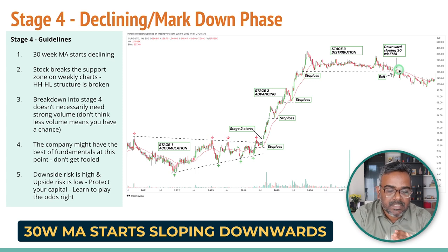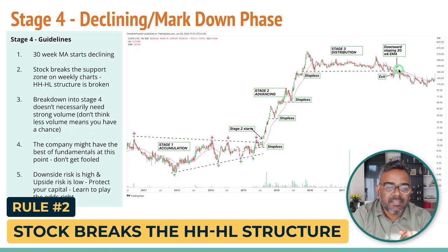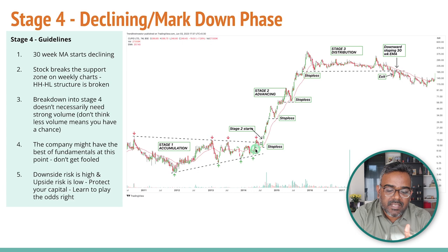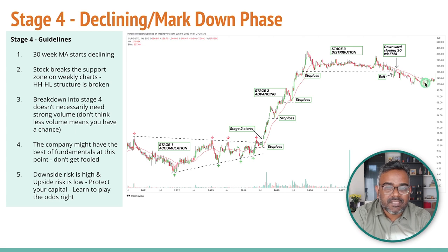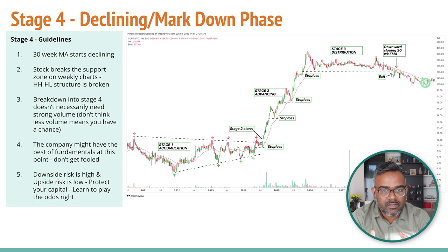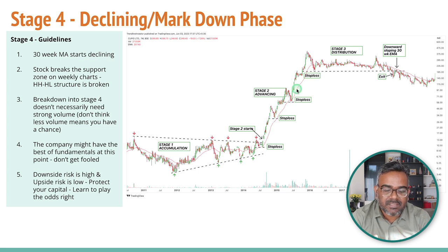The next important rule is that the stock needs to break the higher high, higher low structure. In Stage 2, a stock has been making higher highs and higher lows. In Stage 4, it does the exact opposite — it forms a lower high, lower low structure. Any stock in a downtrend will have a lower high, lower low structure, and any stock in an uptrend will have a higher high, higher low structure. Stage 4 is the exact opposite of Stage 2. That's rule number two.